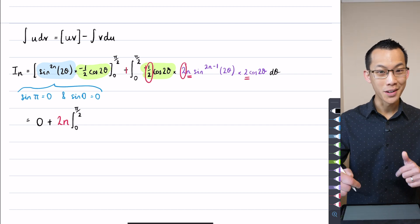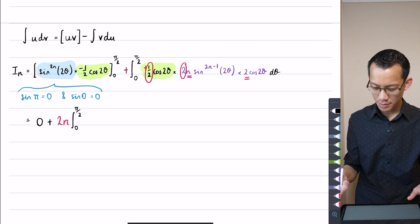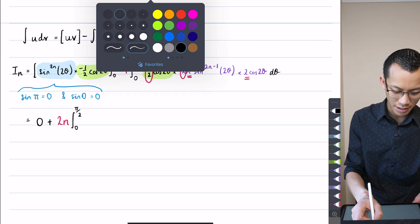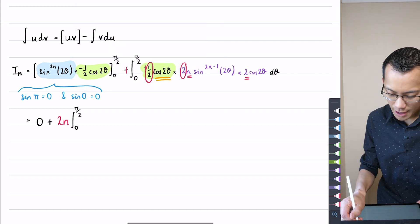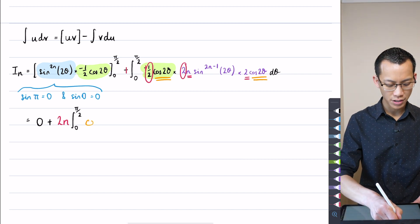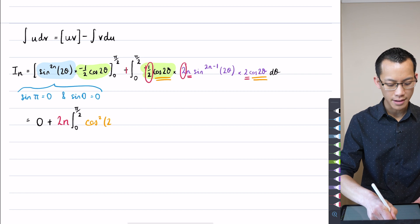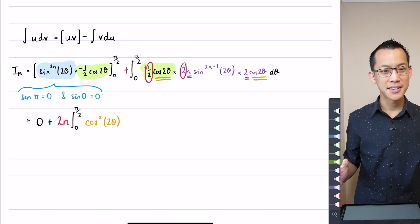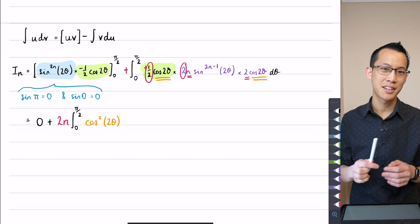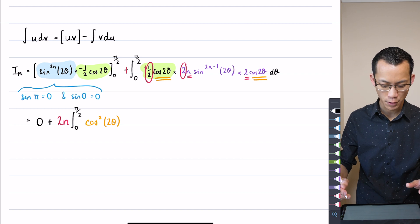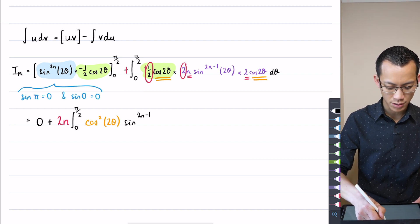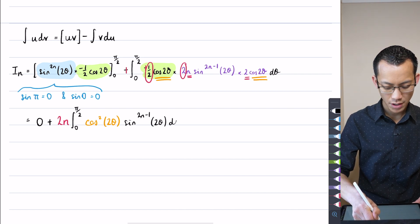Alright, what's left? Well, we've got a couple of sort of paired up terms here, right? I've got a cos 2 theta there and another cos 2 theta there. So then right out the front, I'm just going to combine those into a cos squared 2 theta. And then the last thing that I have is the sine 2N minus 1 2 theta, which I needed because that's going to be part of I_N minus 1. So hopefully you're following along with that. Let's just write it down: sine of 2N minus 1 2 theta with respect to theta.